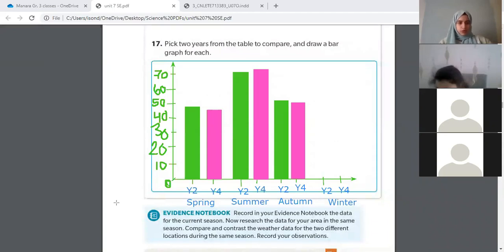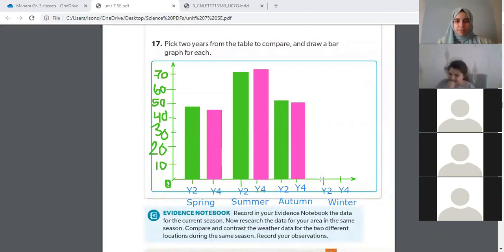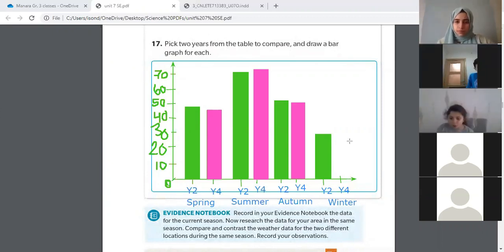Yazan, I'm trying to unmute you. Yeah. What's the temperature for year two winter? 28. So because it's 28, is it going to be closer to 30 or closer to 20? 30, good job Yazan. Thank you. Ward, what was the temperature in year four winter? 19 Fahrenheit. So is it going to be closer to the 10 or the 20? 20. Okay, thank you.